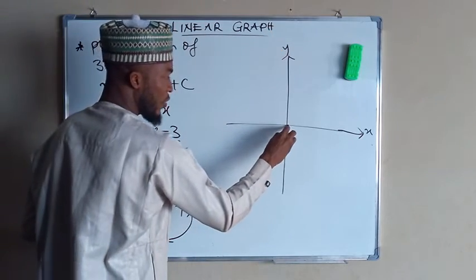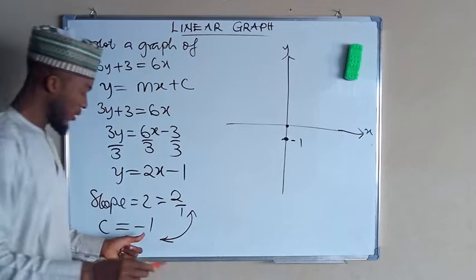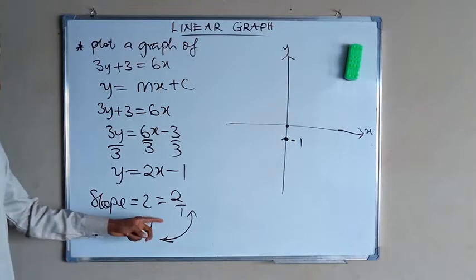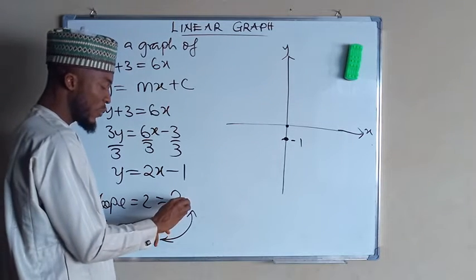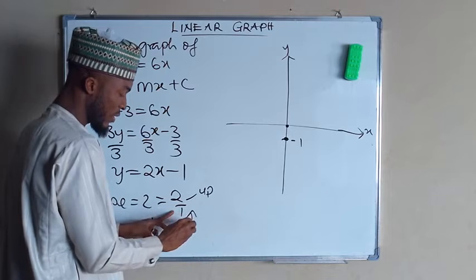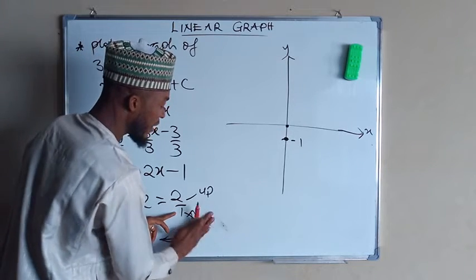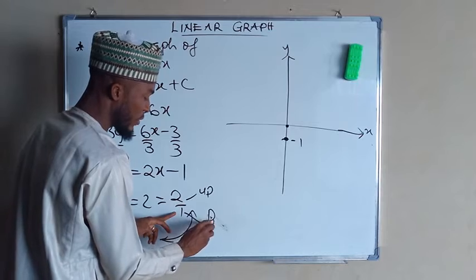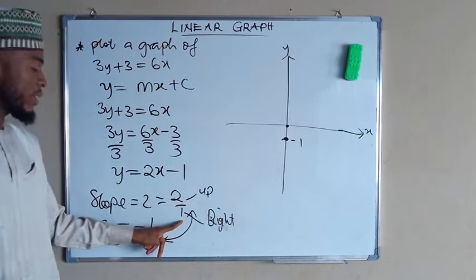So from the origin, this is negative 1. So this is our intercept. Now the slope is 2 divided by 1. This means you go up 2 times, then you go to the right 1 time.